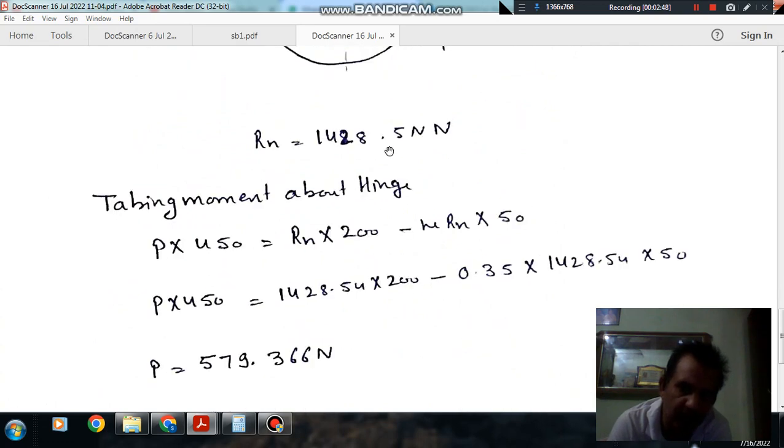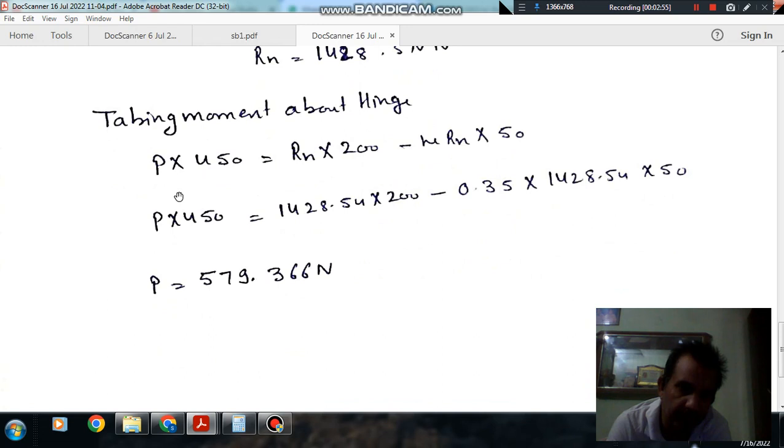Now putting the value of Rn, that is 1428.5 N, and putting the value of μ as 0.35, we can find P, which is 579.366 N.